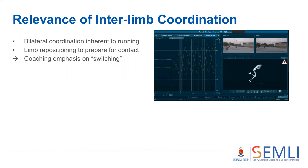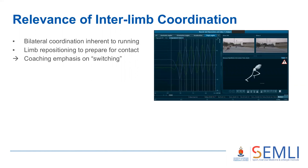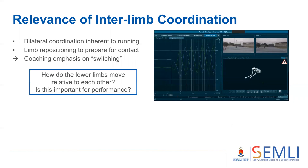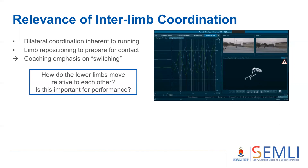While the stance phase is vital because this is when force application occurs, the preparation for contact is equally important and technical training emphasizes limb repositioning during the flight phase — sometimes referred to as leg switching by coaches. However, to date no empirical research has examined how the limbs move relative to each other or whether this may be an important factor in sprint acceleration performance.